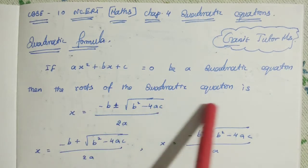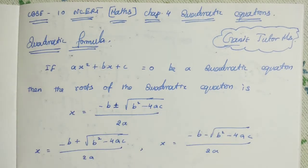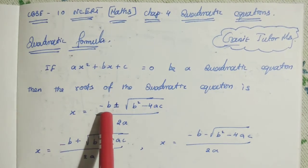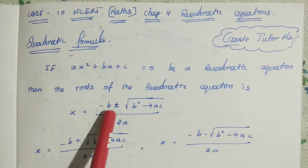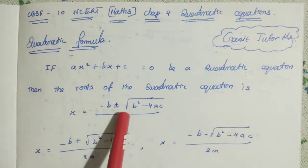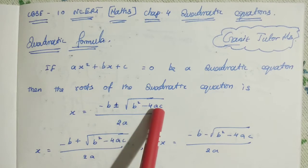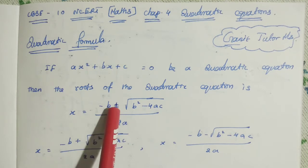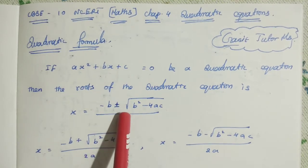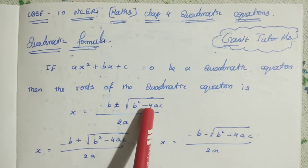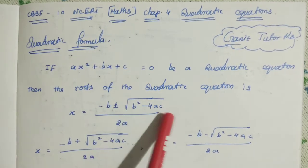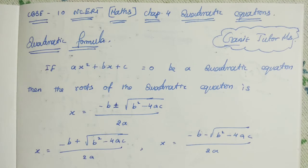Then the roots of a quadratic equation: we can say that X is equal to minus B, plus or minus the square root of B squared minus 4AC, divided by 2A. Here, minus B plus or minus root of B squared minus 4AC; A is the coefficient of X squared, B is the coefficient of X, and C is the constant.